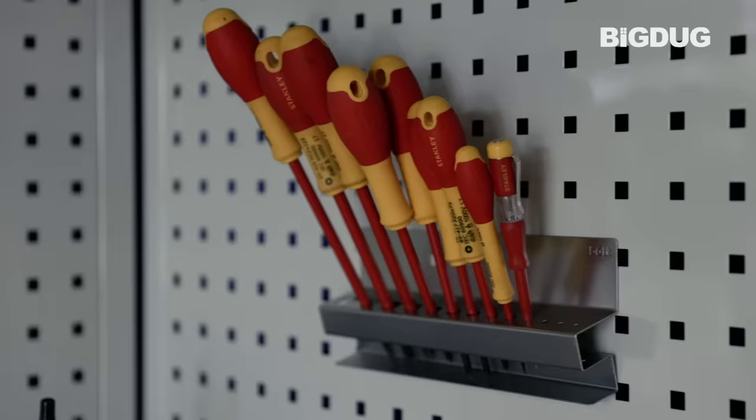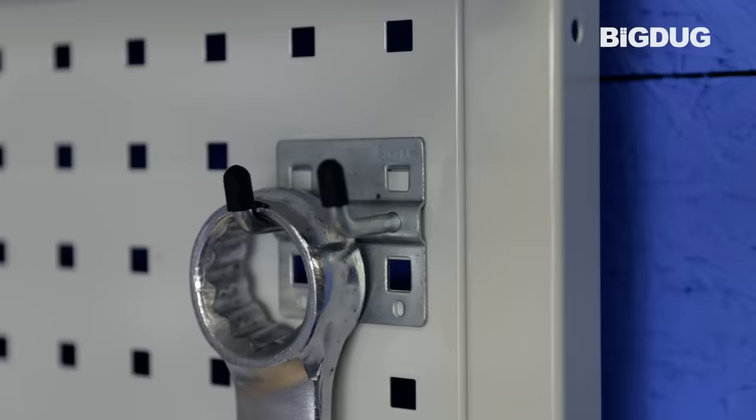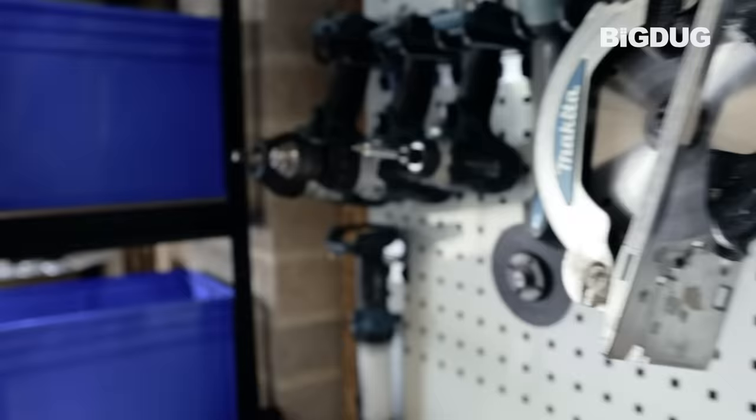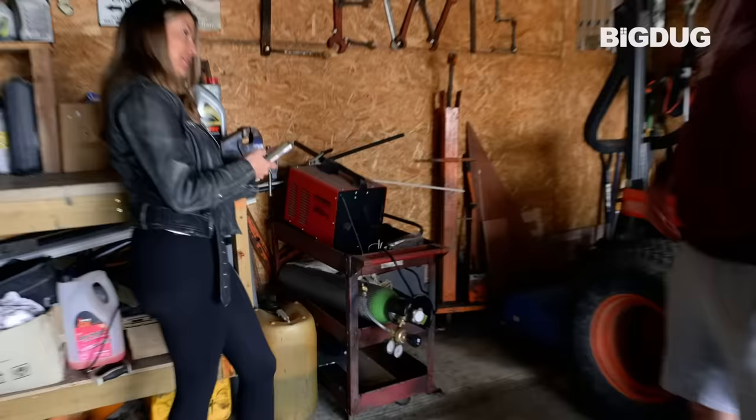As you can see all the tools are on display makes it so much easier when you're going from a car you haven't got to go through a drawer or a cupboard or a toolbox you can just go to the panel pick it off and there's so many different attachments. The possibilities are endless for what you can put on there so making life really easy.